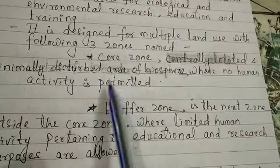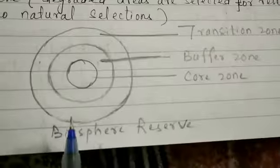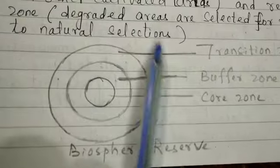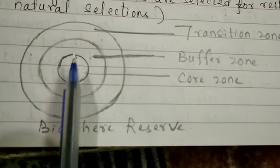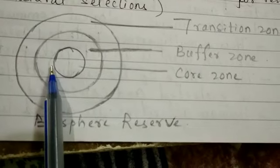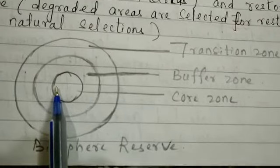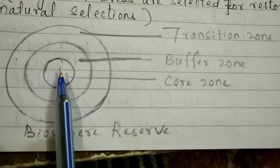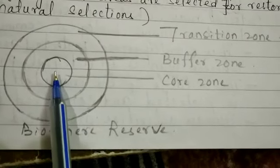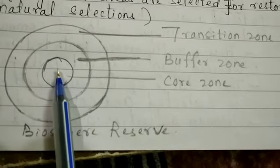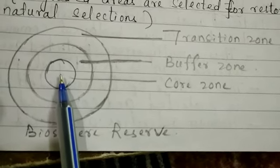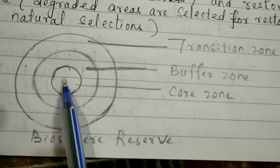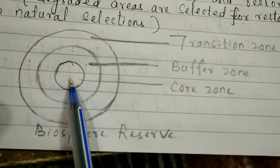Multiple land use means the biosphere reserve has three particular zones. Very large forest areas are taken into consideration. The central part is called the core zone — it is the minimally disturbed area of the biosphere. No human activities are permitted here, and human beings are not allowed to enter this zone. It is the most protected area.